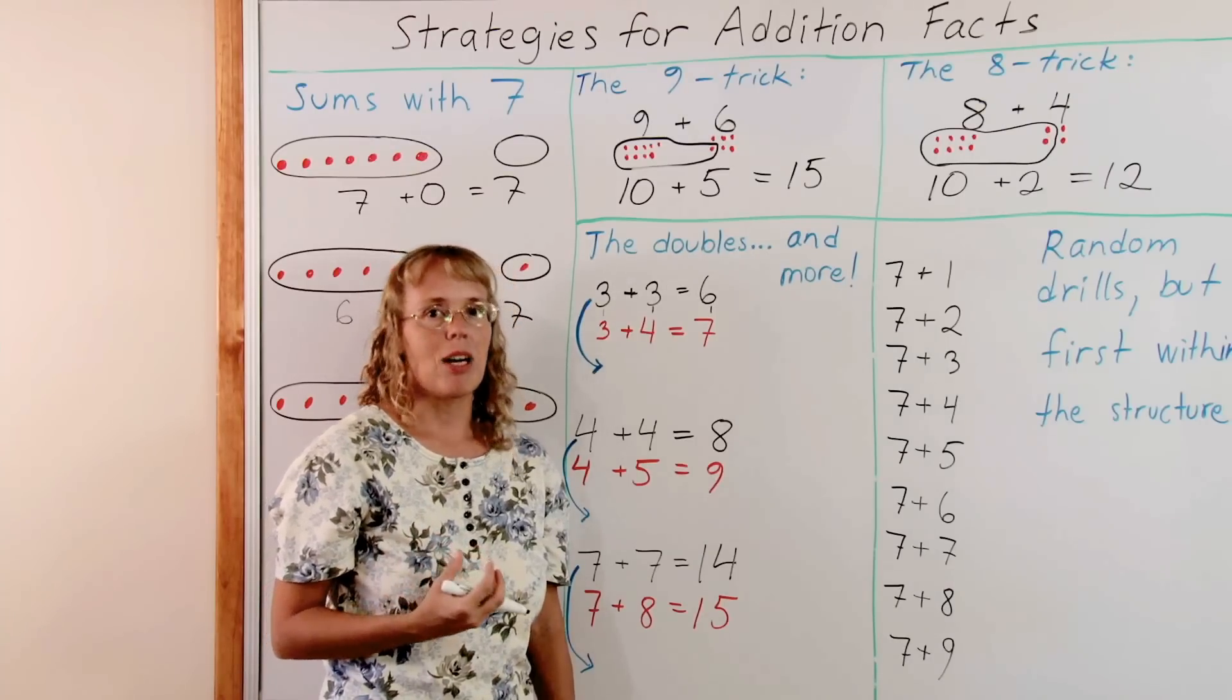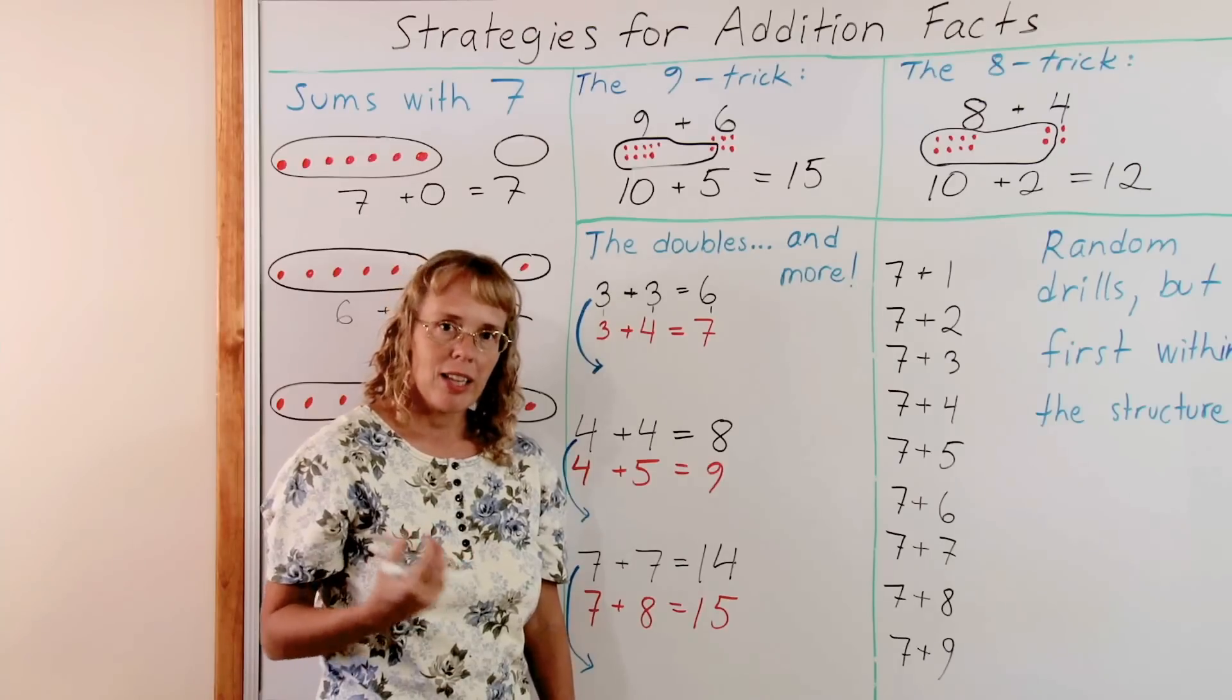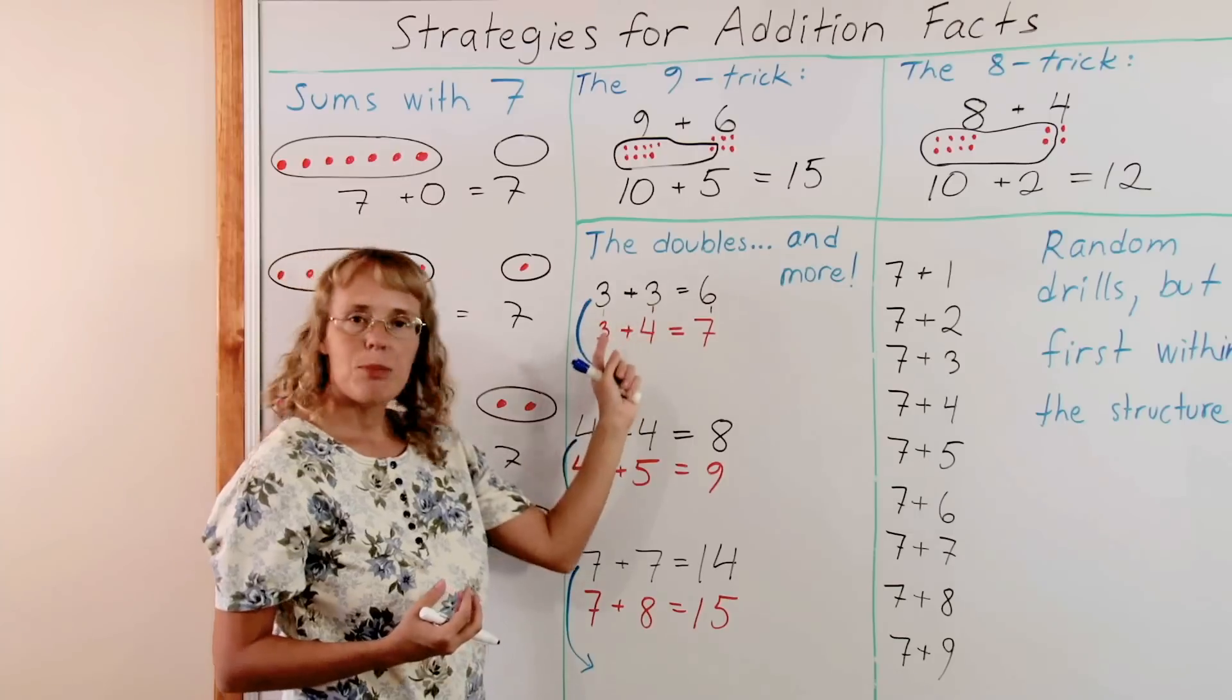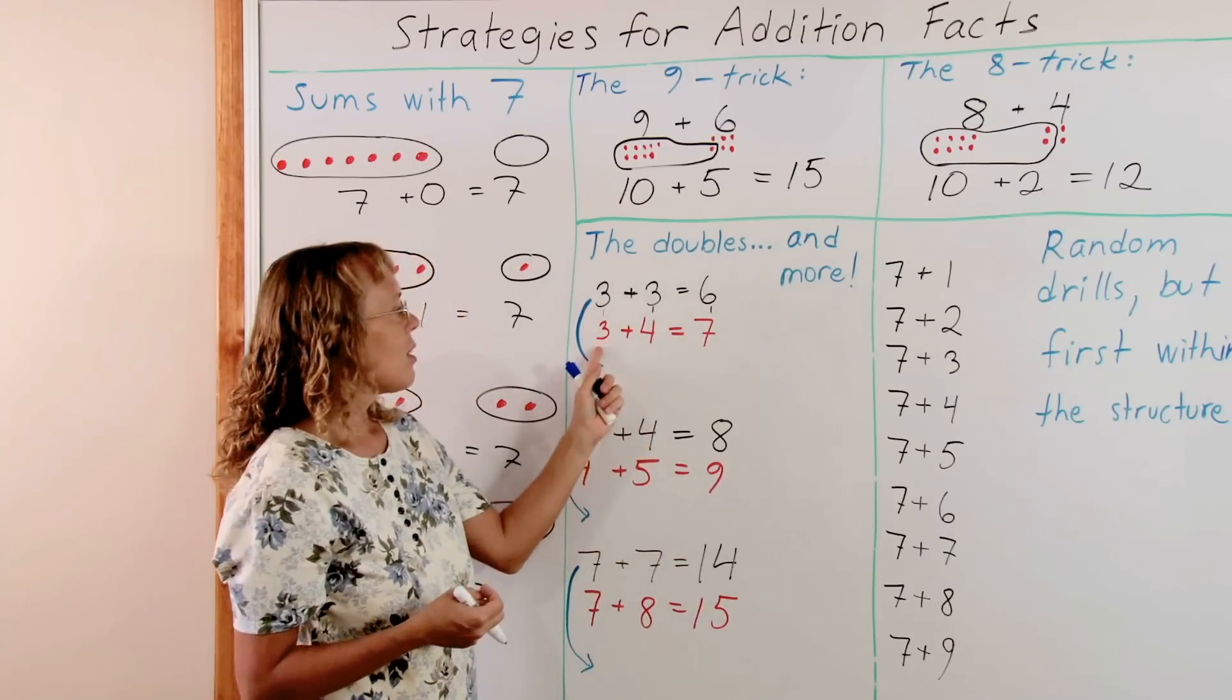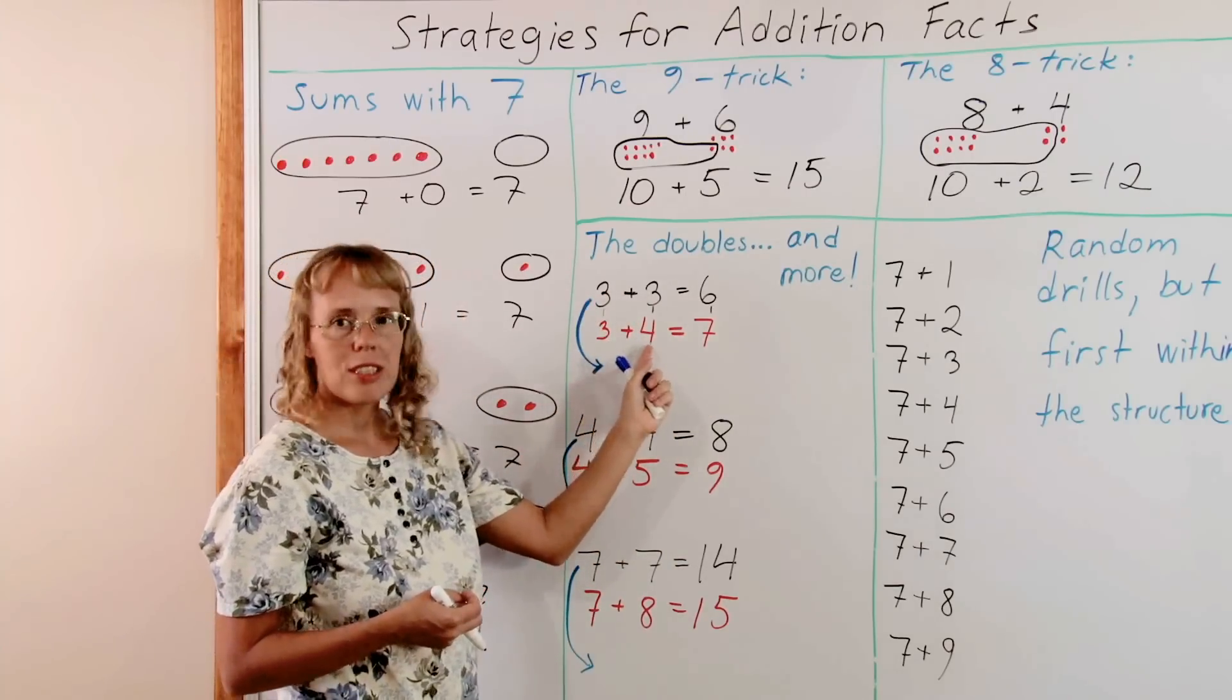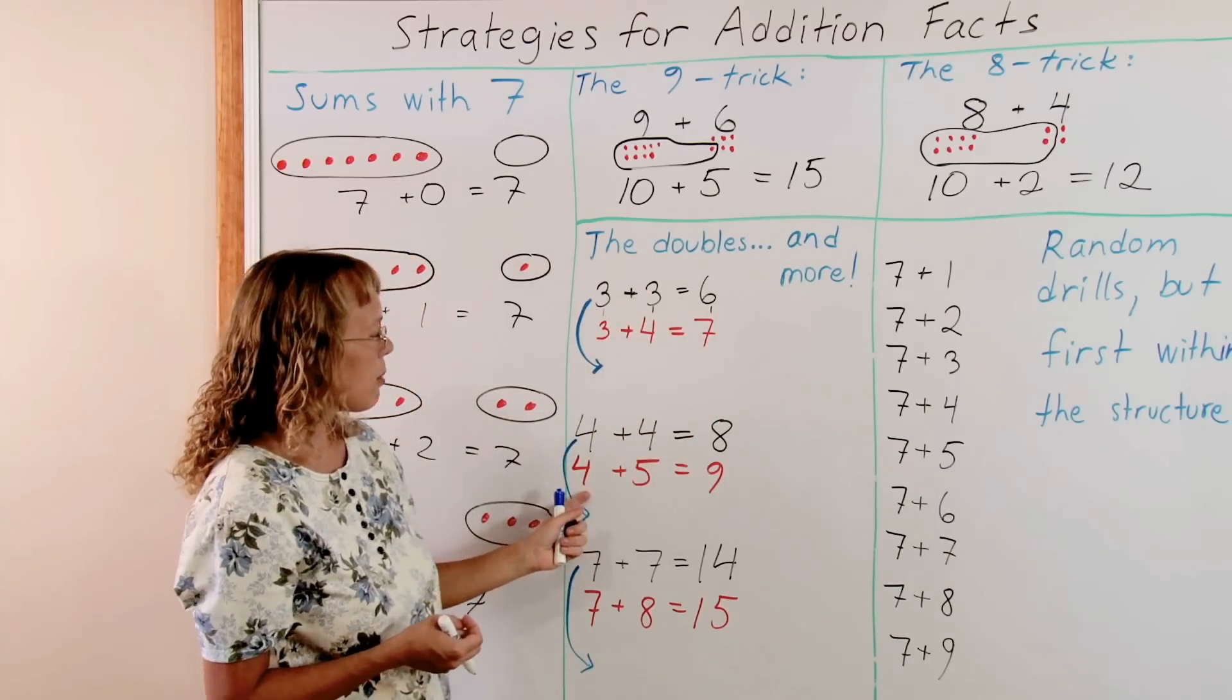But once they have memorized the doubles, they can then learn or know some other addition facts. Here's one. 3 plus 3 equals 6 but 3 plus 4 is just one more. It's like the doubles and one more. 3 plus 4 is 7. 3 is the same, 4 is just one more than 3. So the answer is one more than 6.